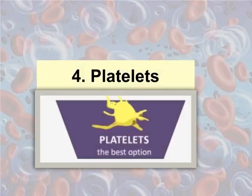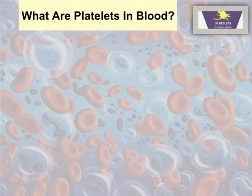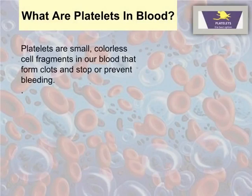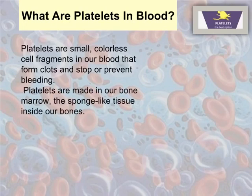The fourth component of blood is platelets. Platelets are small, colorless cell fragments in our blood that form clots and stop or prevent bleeding. Platelets are made in our bone marrow, the sponge-like tissue inside our bones.